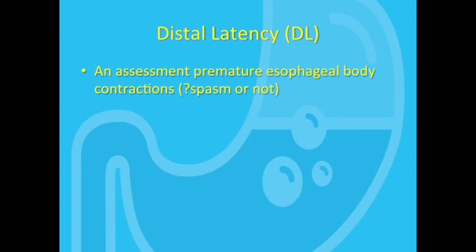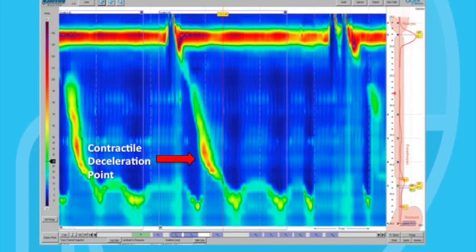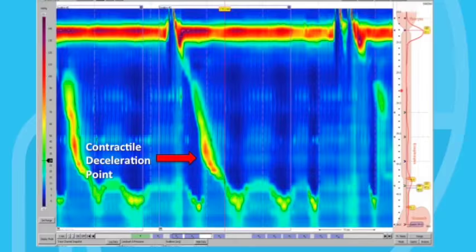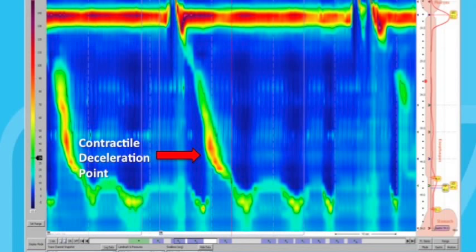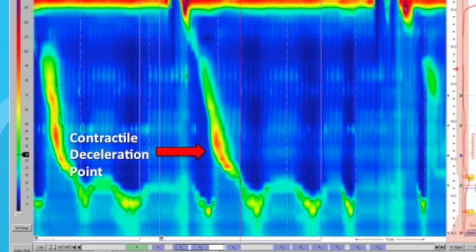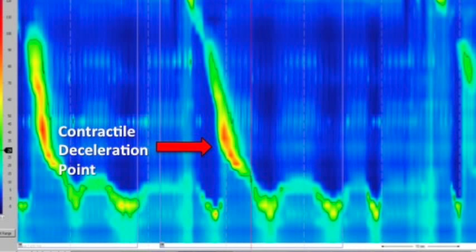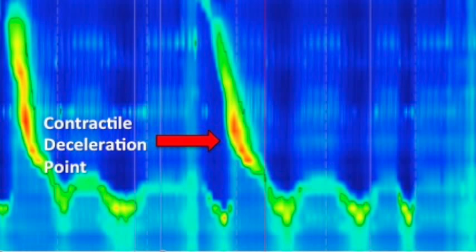Now, in order to understand distal latency, I need to introduce one more term, which is the contractile deceleration point. This point, as you might expect from the name, is where the velocity of the peristaltic pressure wave begins to slow on the tracing as it approaches the EGJ. You can see from this point next to the red arrow on the tracing where the contractile front velocity slows, i.e. it slopes more to the left as it approaches the level of the EGJ.